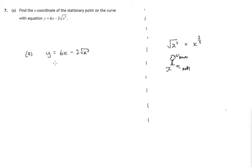So let's rewrite that, 6x minus 2x to the 3 over 2. And let's differentiate that, dy by dx. Differentiating 6x will give you 6.